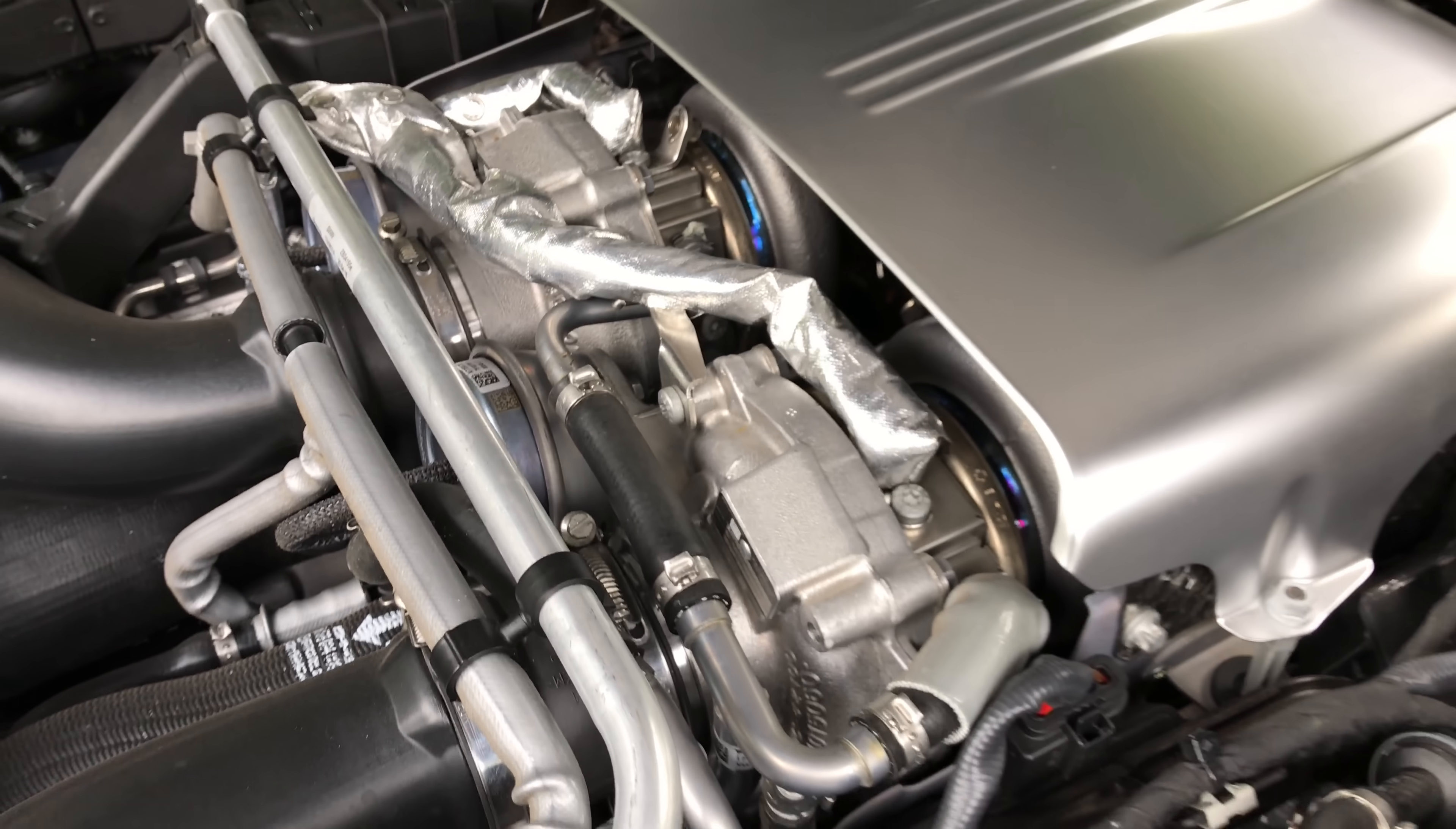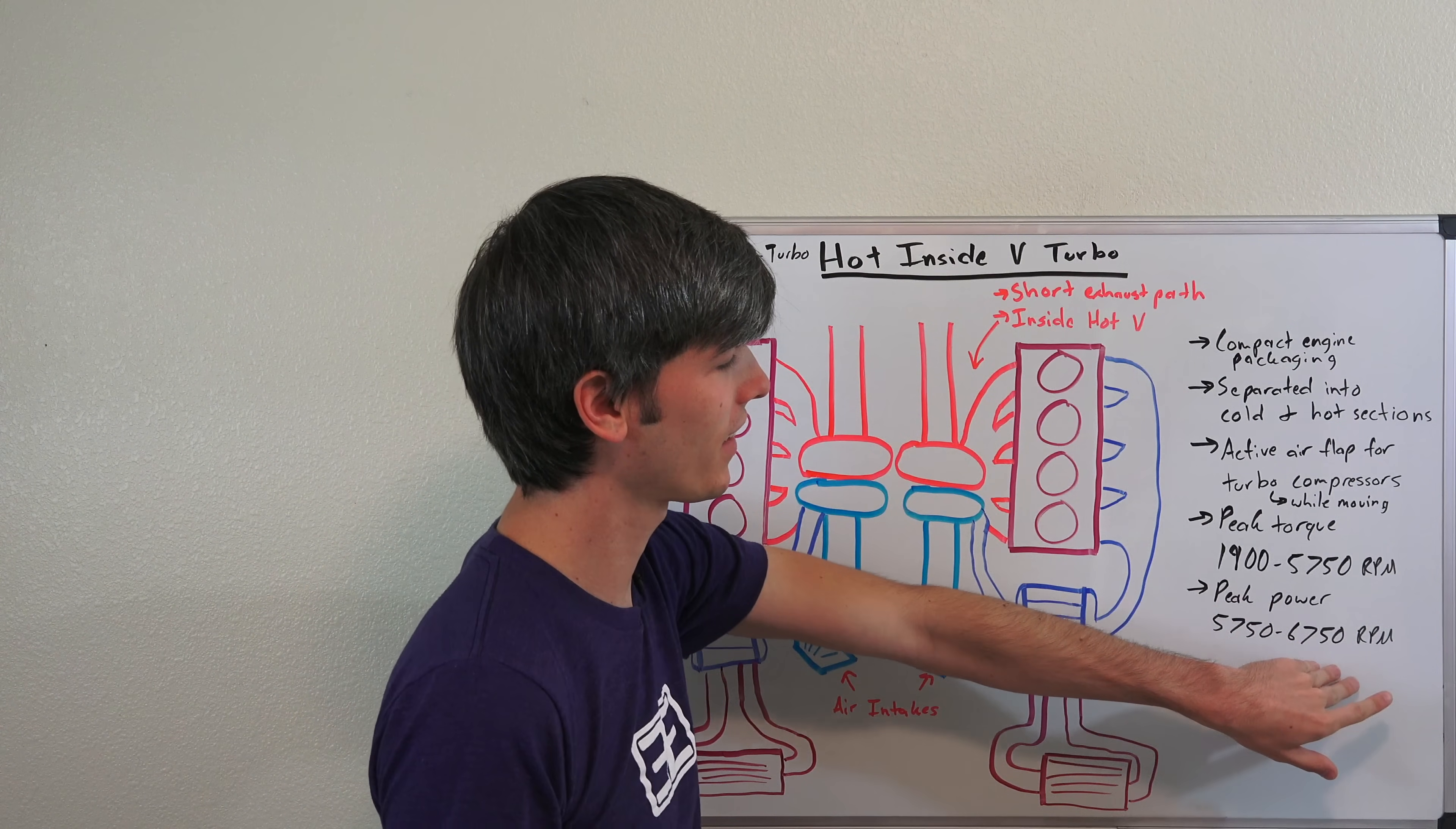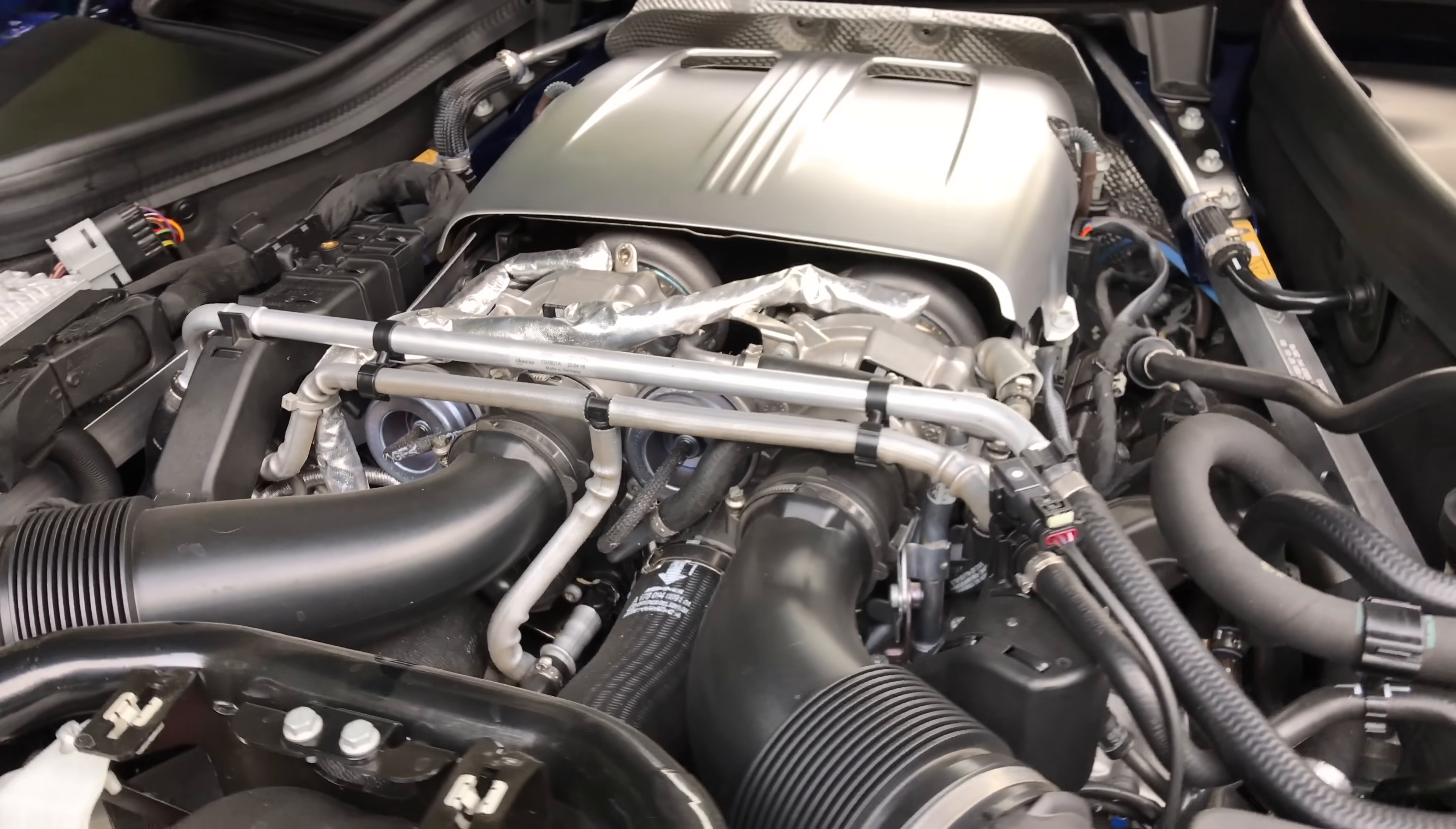One more thing I thought was interesting about this engine is that it has peak torque from 1900 to 5750 rpm, so a nice wide torque band, nice and flat. Very cool that they've done that and it also has peak power from 5750 to 6750 rpm, so very close to its 7000 rpm redline. What's cool about this is yes, you are going to have a torque drop after 5750 rpm, but the rpm is going to compensate for that as far as power goes. So it means that you're not going to want to short shift.